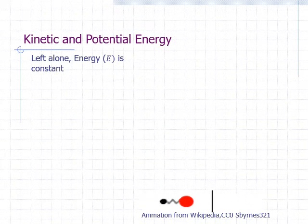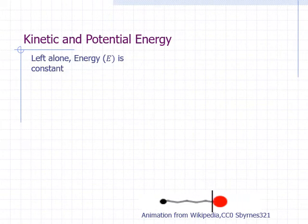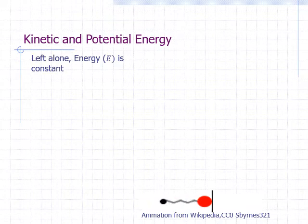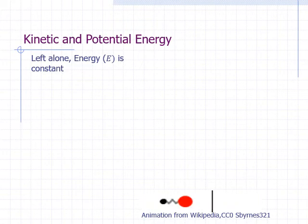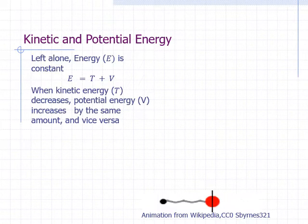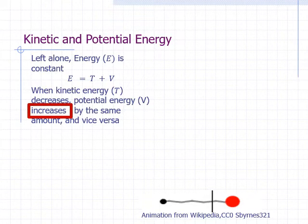If we leave a harmonic oscillator alone, the law of conservation of energy says that its energy should be constant. As the oscillator moves away from its turning point, it speeds up — its kinetic energy increases. As it moves away from the equilibrium location, it slows down, eventually stopping at the turning point — the kinetic energy decreases. The answer is that the energy of the oscillator exists in two forms: kinetic and potential. When kinetic energy decreases, it is being converted into potential energy. A drop in kinetic energy implies an increase in potential energy by the same amount, and vice versa.